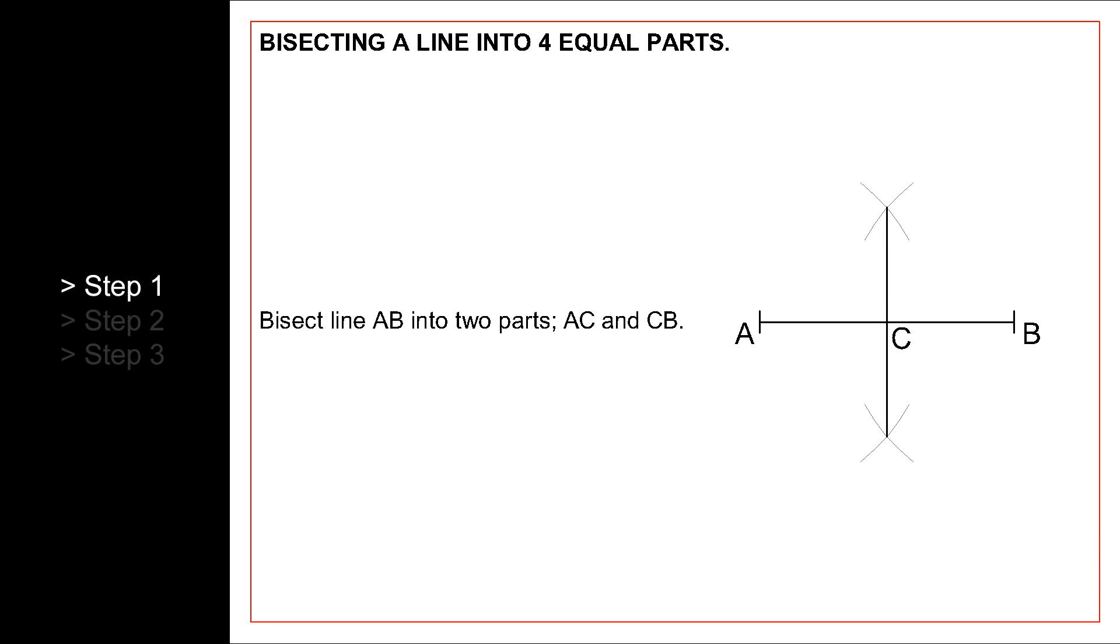First, we bisect AB into two equal parts and label the midpoint C. If you do not know how to bisect a line into two, please follow the link displayed or in the description below.